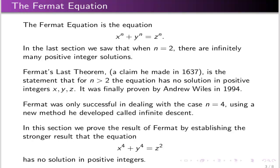Let's start with the Fermat equation — the very famous one: x to the n plus y to the n equals z to the n. In our last section, we looked at Pythagorean triples, which was the case when n equals 2, and we found infinitely many. Fermat's Last Theorem, a claim he made in 1637, states that for n bigger than 2, this equation has no solution in positive integers. That remained one of the biggest open problems in mathematics for three and a half centuries, finally proven in 1994 by Andrew Wiles.